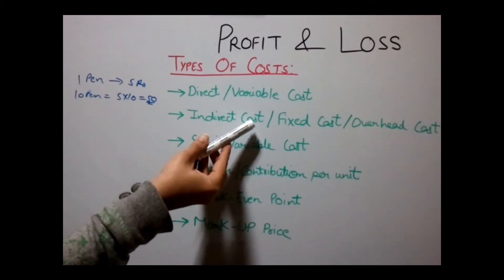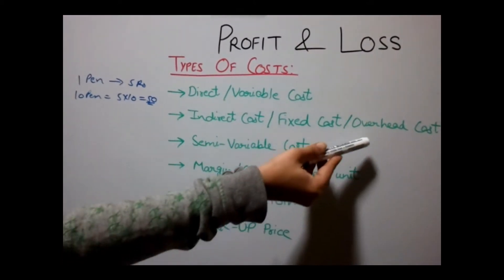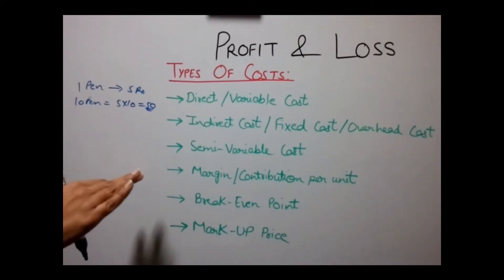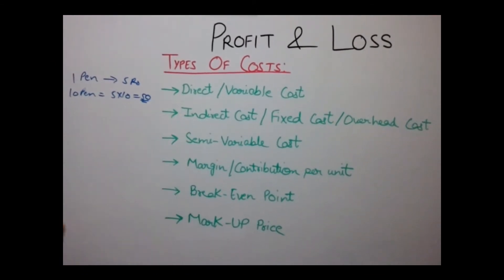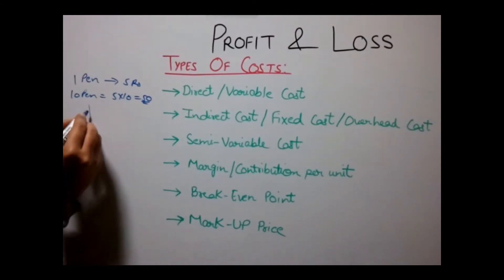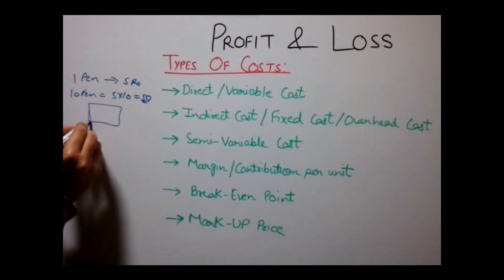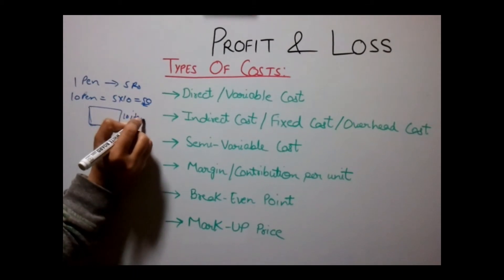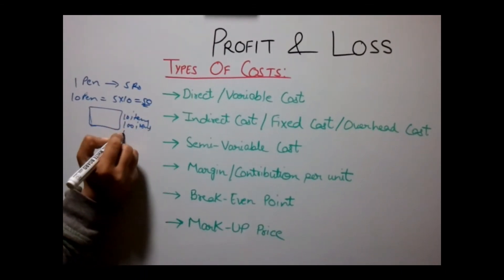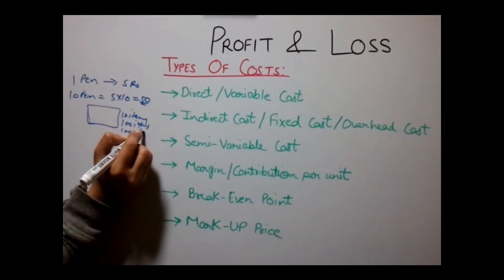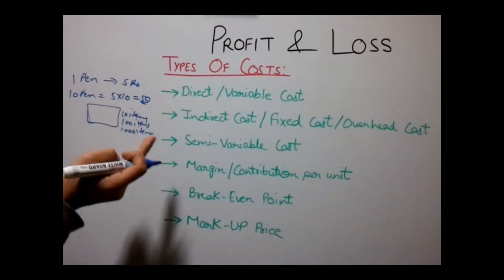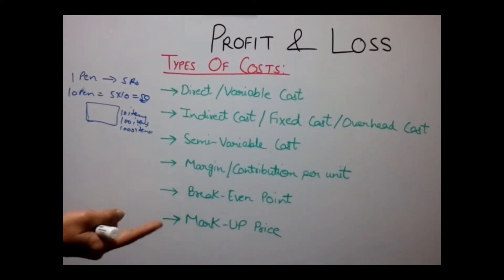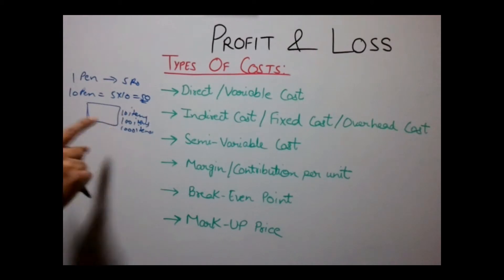The second type of cost is Indirect Cost, also called Fixed Cost or Overhead Cost. This type of cost is not dependent on the number of units produced. For example, the rent of a storage room would be the same whether you are manufacturing 10 items, 400 items, or 1000 items. Indirect Cost is independent of the number of units of the product.